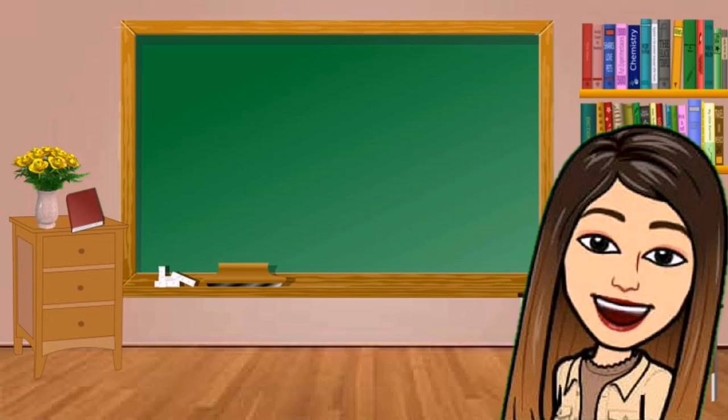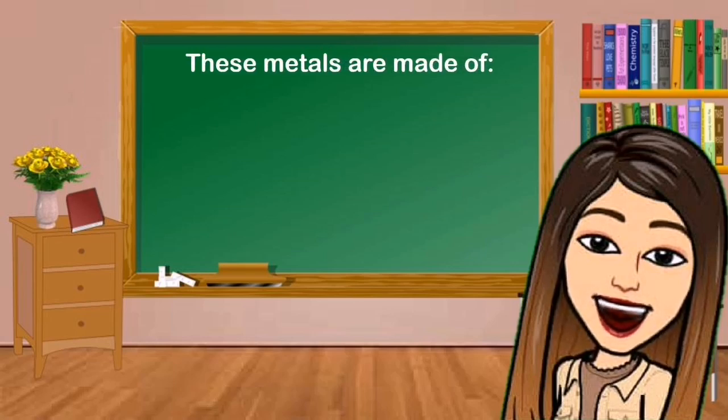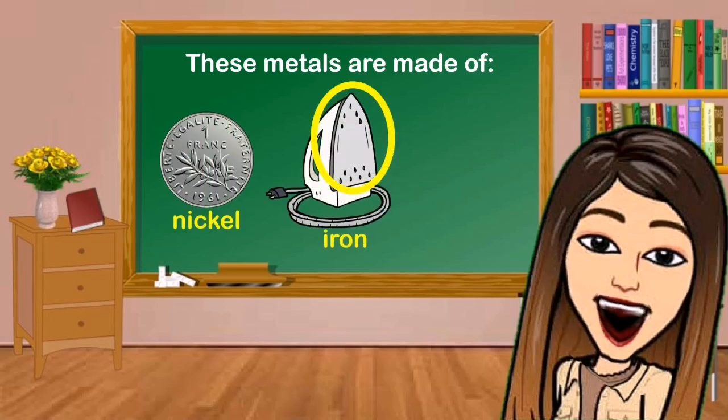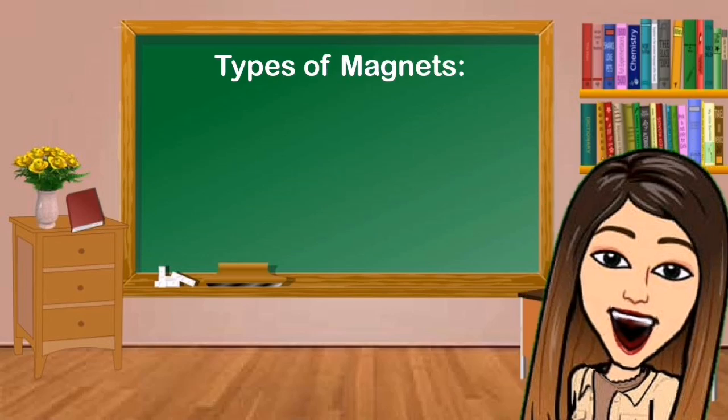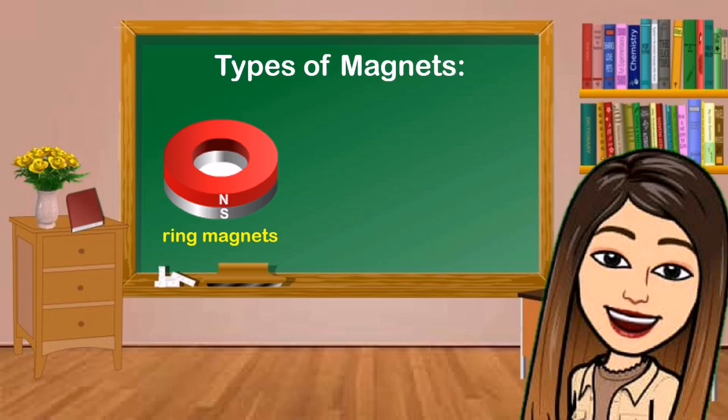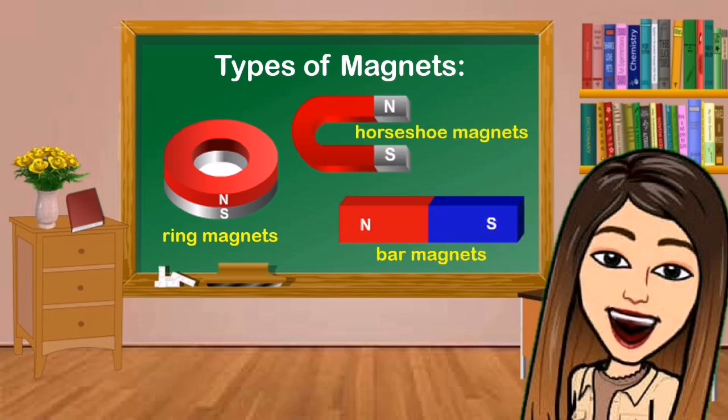Magnets are attracted to the three types of metals. These metals are made of nickel, iron, and cobalt. There are several types of magnets like ring magnet, horseshoe magnet, bar magnet, or rectangular magnet.